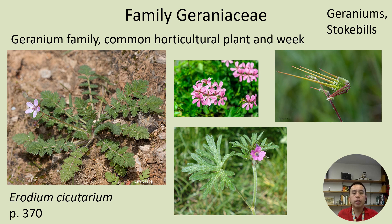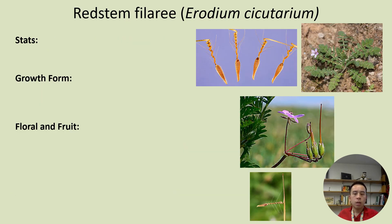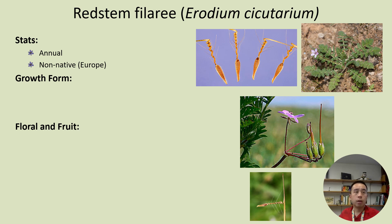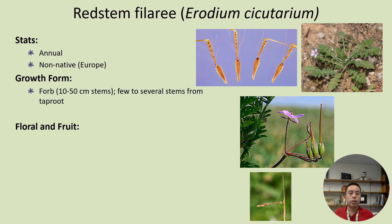Next up, we have the Geraniaceae family — the geranium family — which includes common species like ornamental geraniums and stork's bills. We're going to be going over stork's bill plants, specifically Erodium cicutarium, found on page 370. This is a very common annual species that is non-native and introduced from Europe, seen all around many different rangelands. It grows as a forb with several stems coming out from the taproot, growing as a rosette basally with basal leaves at the ground.